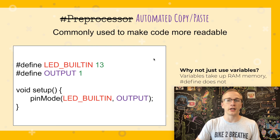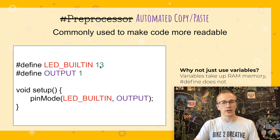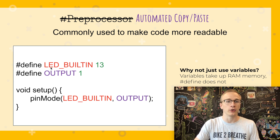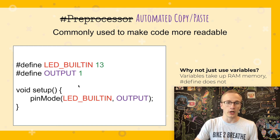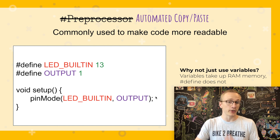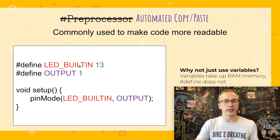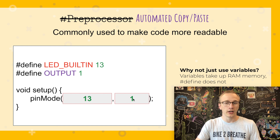One of the most common uses for a define statement is to make your code more readable. Instead of hard-coding numbers like 13 and 1 everywhere, you can give them names or labels. So instead we could write our code to reference LED_BUILTIN and OUTPUT instead of 13 and 1, and our code would look like pinMode LED_BUILTIN, OUTPUT. When the preprocessor runs it does a find and replace — it finds LED_BUILTIN and replaces it with 13, and finds OUTPUT and replaces it with 1. This is the code that actually gets compiled behind the scenes.